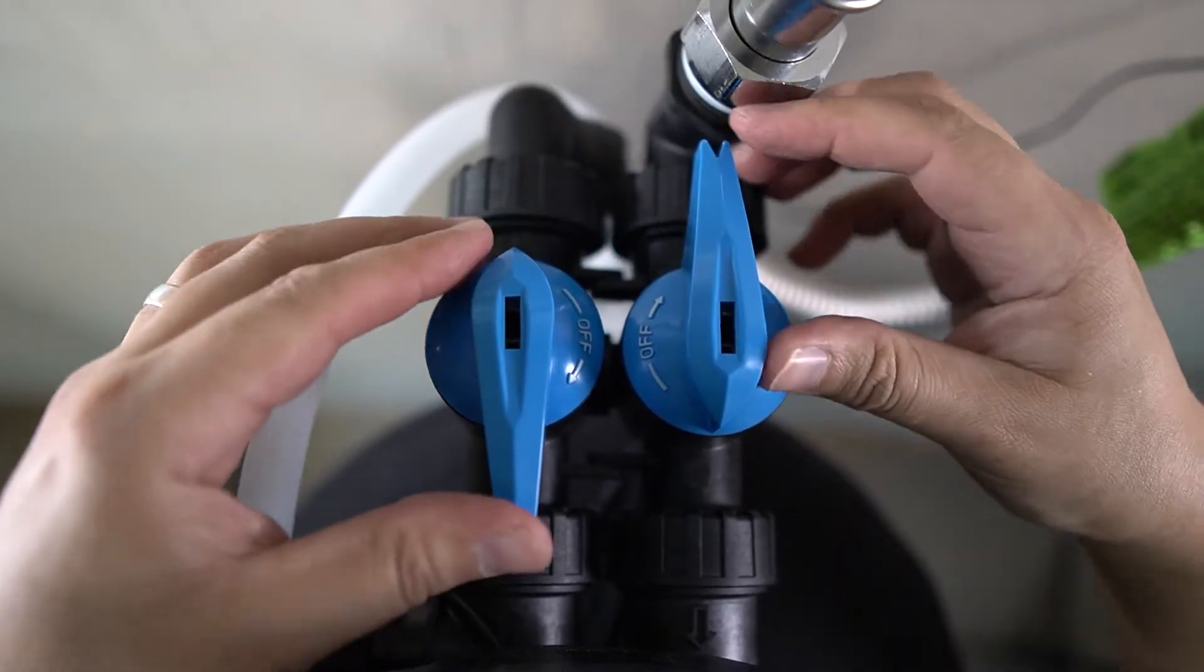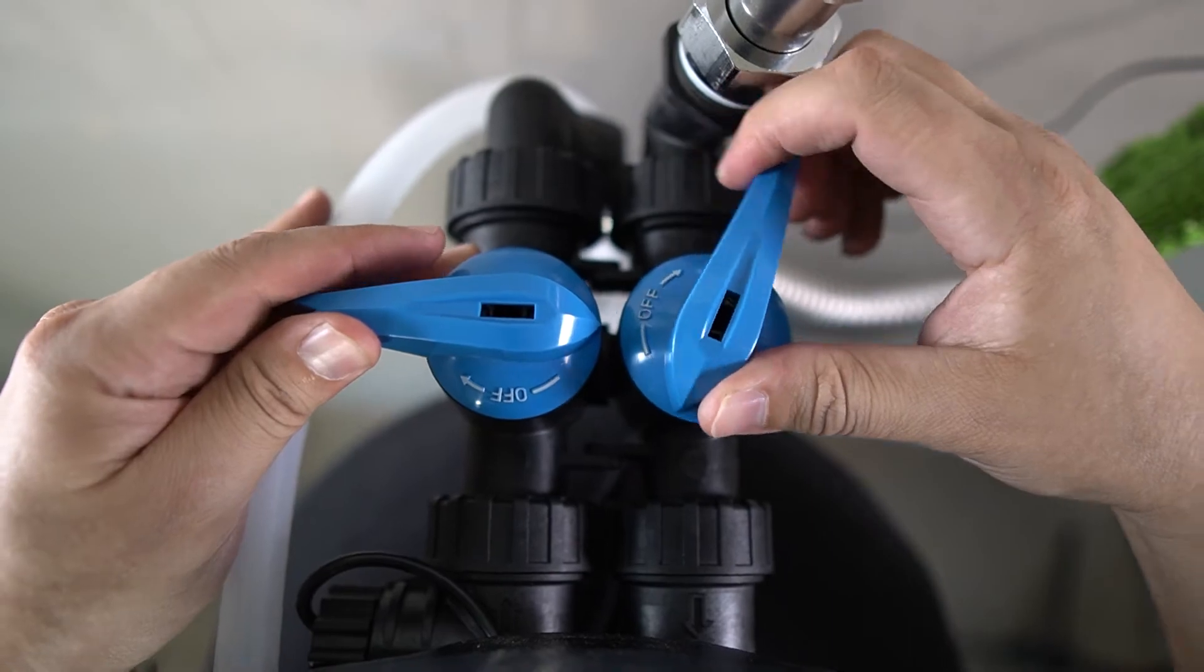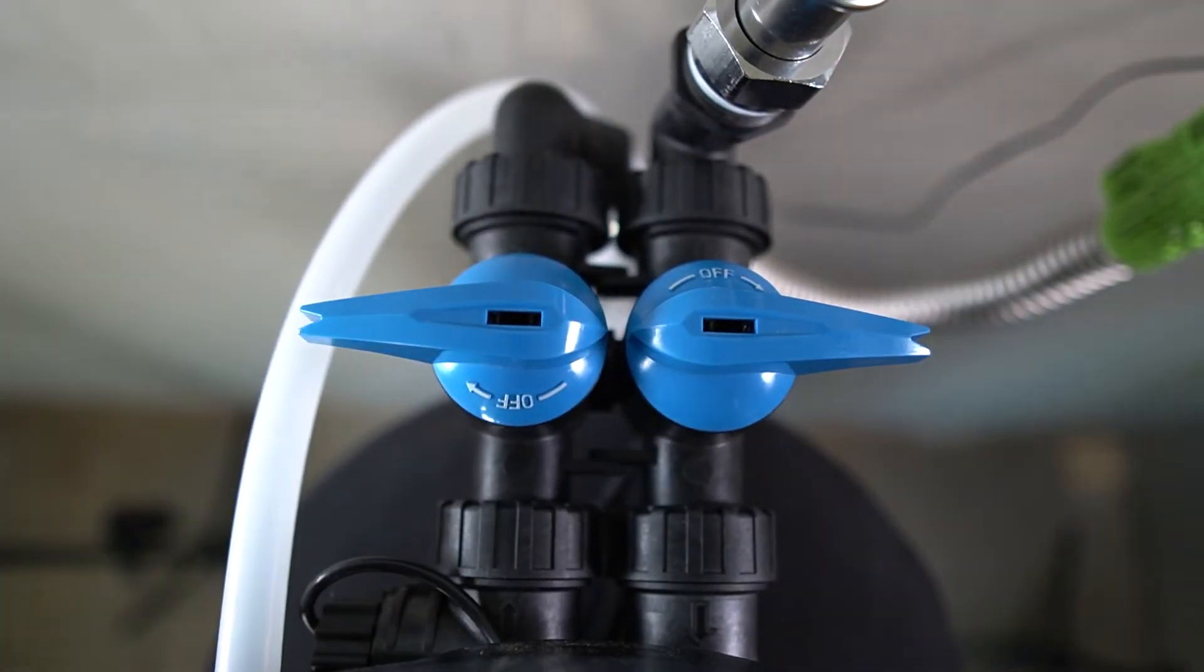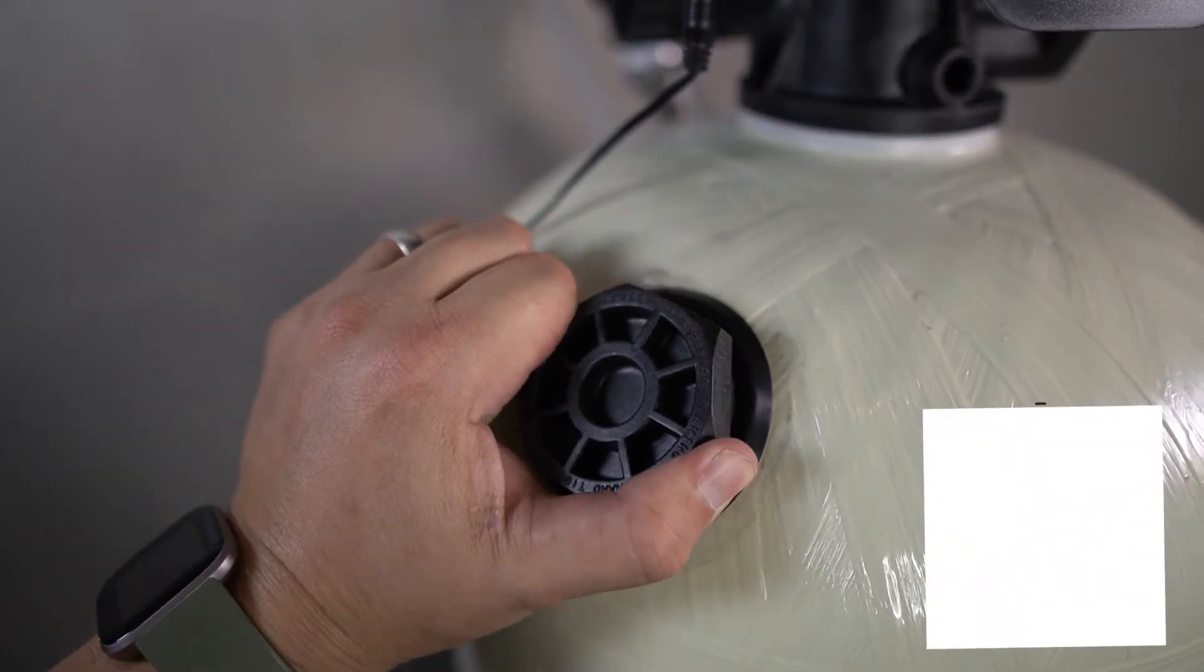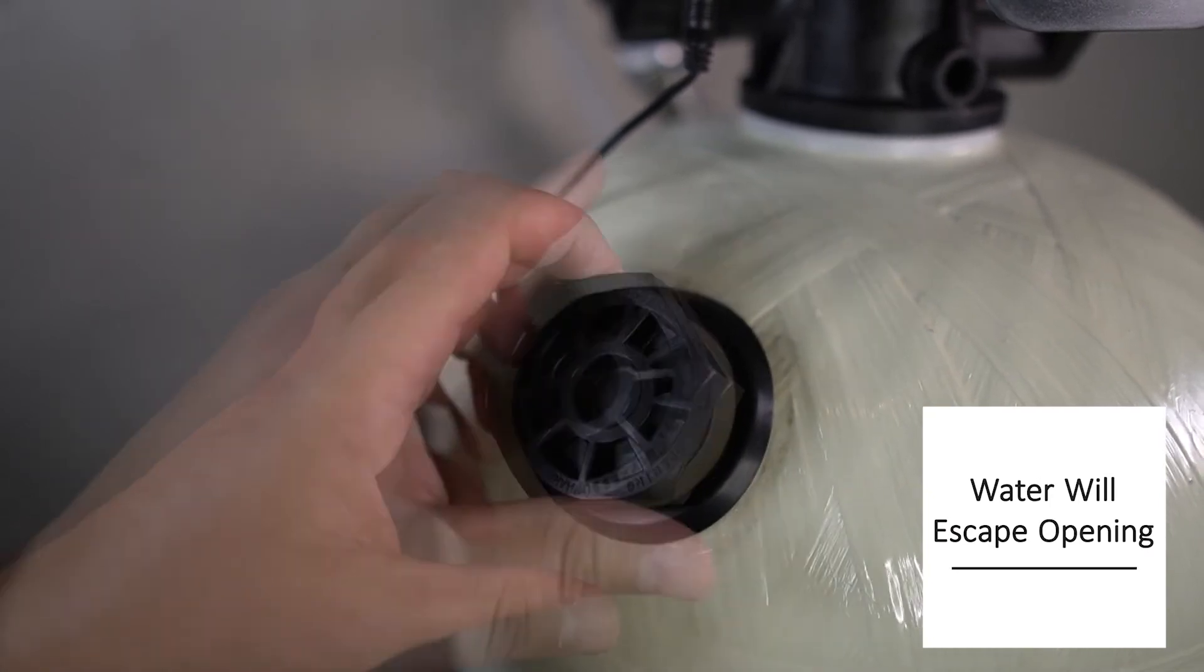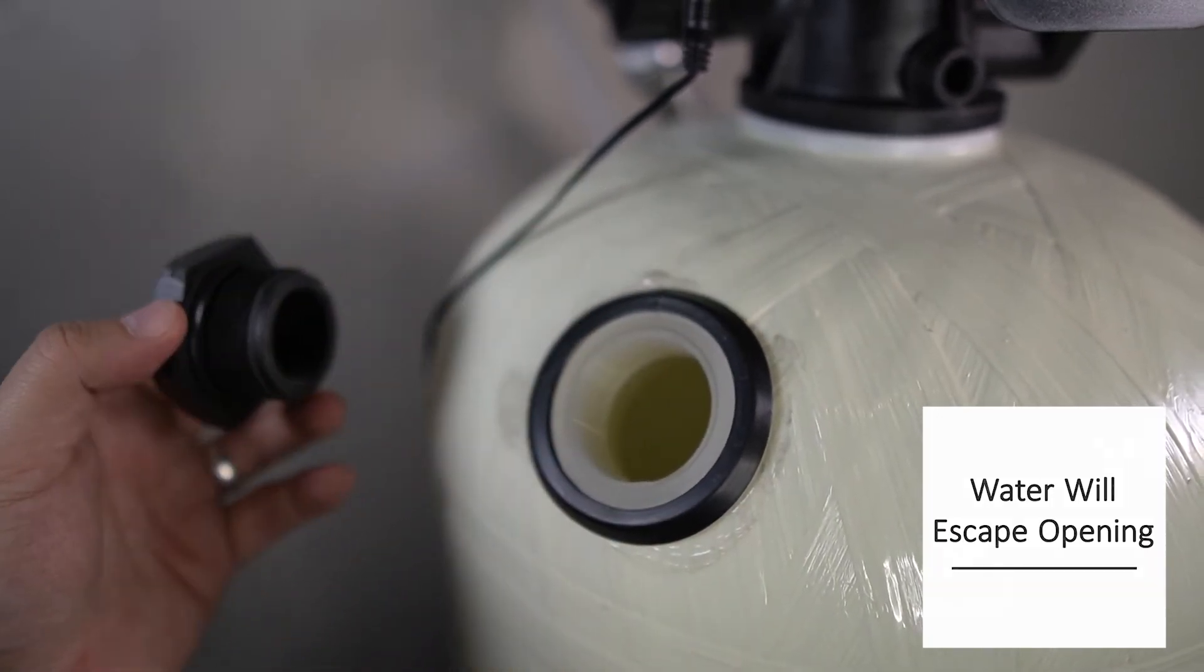With the pressure relieved, you can now set the tank to bypass. Unscrew the cap by turning it counterclockwise, and note that water will exit the tank after the cap has been removed.